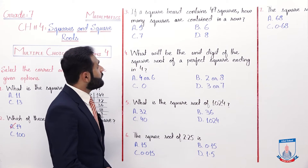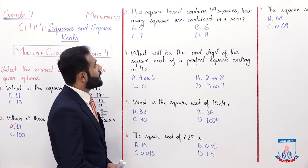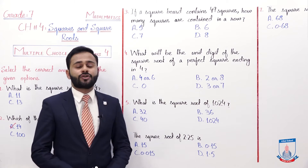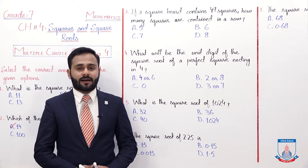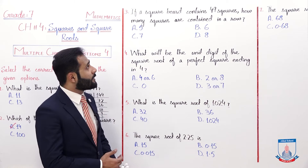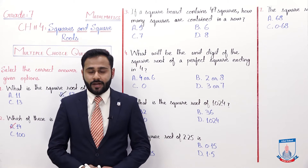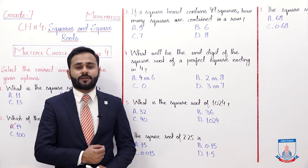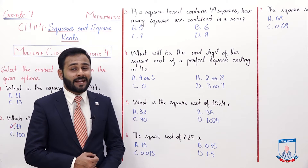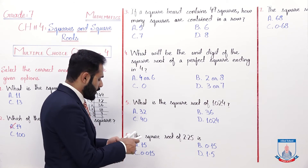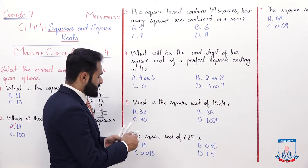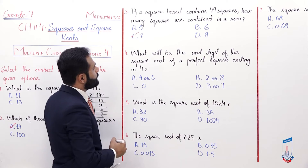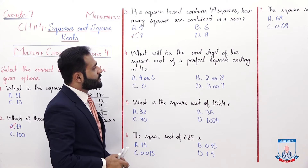MCQ number 3: if a square board contains 49 squares, how many squares are contained in a row? A square board containing 49 squares means we need to find how many squares fit in one row. We take the square root of 49, which is 7. That means 7 squares in a row, so the correct option is c) 7.